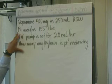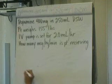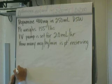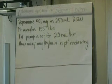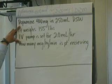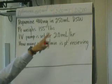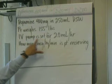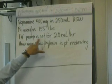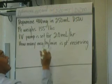Now, with all the questions that we're going to have — these are harder type questions — we're all going to start out, once again, with the magic line from one end of the paper to the other. Let's take a look at the question: Dopamine 400mg in 250 D5W. Patient weighs 155 pounds. IV pump is set for 20 mLs an hour.